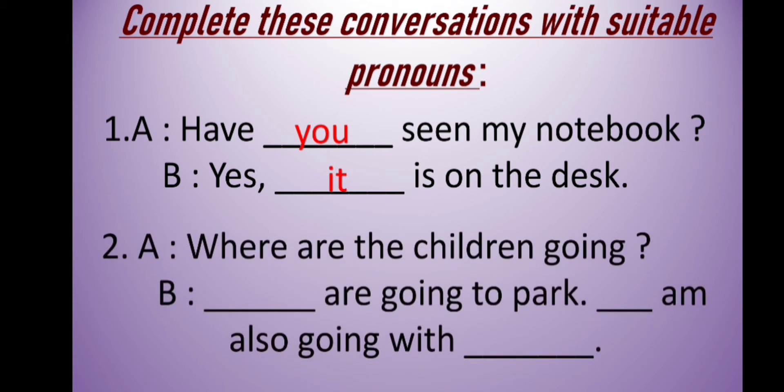The second conversation — A: 'where are the children going?' I am asking where the children are going. You are answering: 'dash are going to park. Dash am also going with dash.' We are talking about the children, so for the first blank we will use 'they,' because 'they' is used as the subject of the sentence.